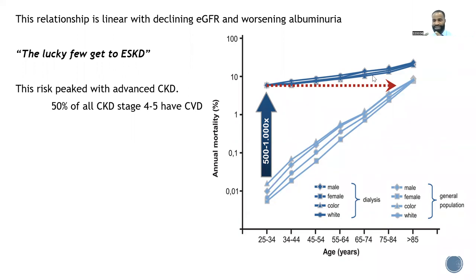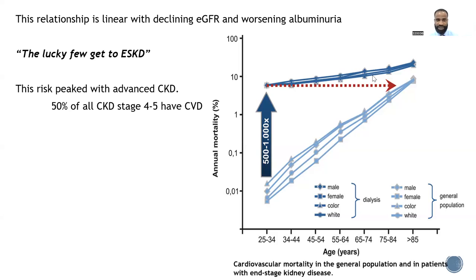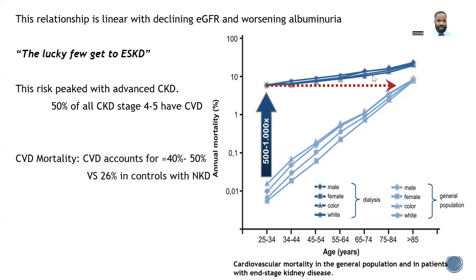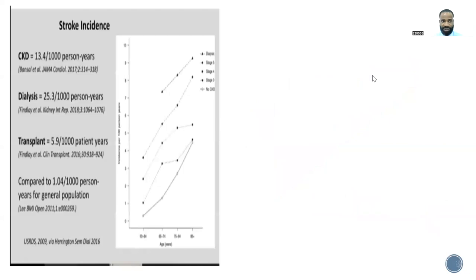So a patient aged 25 to 34 years with end-stage kidney disease has a cardiovascular profile similar to someone 85 years of age in the general population without kidney disease. The cardiovascular insult in advanced kidney disease is high — about 40 to 50% compared to about 26% in the non-CKD population. Importantly, this problem doesn't disappear completely even after transplant; cardiovascular events persist post-transplant.